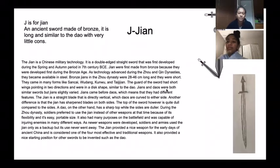J is for Jian, an ancient sword made of bronze. It was long and similar to the Dao, with very little cons.